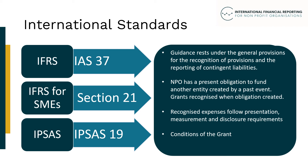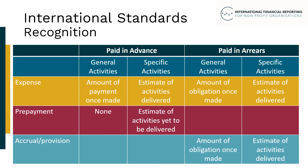This table shows the likely impact on the financial statements depending on whether a grant is paid in advance or in arrears and whether it relates to general or specific activities. Where a grant is paid in advance and is for general activities, an expense is likely to be recognised immediately. If it relates to specific activities, the expense will be an estimate of services delivered, with a prepayment being the difference between cash paid out and services already delivered. Where the grant is paid in arrears and activities are general, an expense to the value of the obligation will need to be recognised with a liability raised. If it relates to specific activities, an accrual will need to be made based on an estimate of activities delivered.